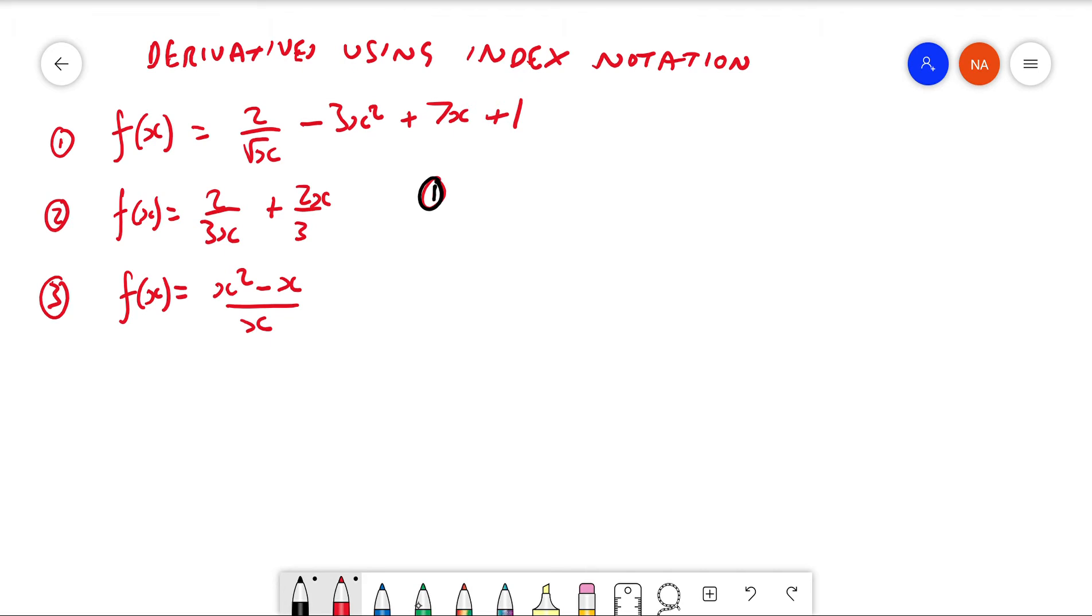First, you have to write the function out using index notation. So this will give us 2x to the negative 1/2 - negative because it's one over - minus 3x² plus 7x plus 1. So the others are already set up for us.